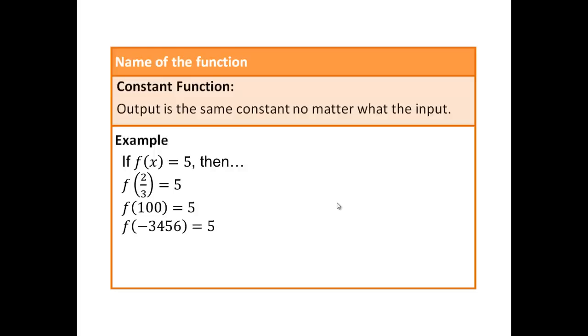f of negative 3,456 is 5. And f of a plus h is 5. So no matter what the input, the output is always 5. That's why it's called a constant function.